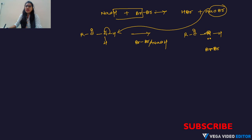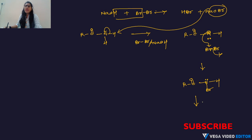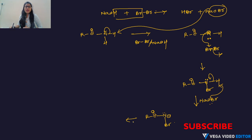The negatively charged nitrogen attacks the bromine, and one bromine departs, giving R–CO–N(Br)–H with the lone pair on nitrogen remaining. Again, NaOBr acts as a base and takes the proton from nitrogen, giving R–CO–N⁻–Br with a negative charge on nitrogen.